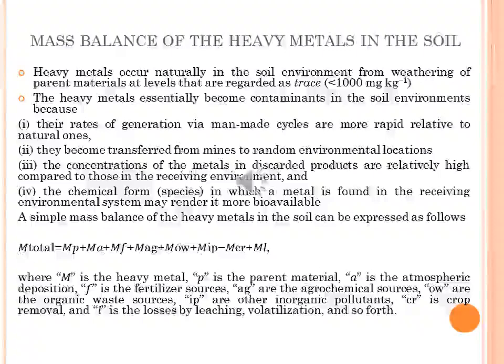A simple mass balance of heavy metals in the soil can be expressed as: M total equals MP + MA + MF, where M is the heavy metal, P is the parent material, A is atmospheric deposition, F is from fertilizer sources, AG are the agricultural sources, OW represents organic waste sources, IP represents inorganic pollutants, CR is crop removal, and L represents losses by leaching, volatilization and so forth.